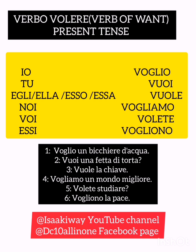Then the next one: 'noi vogliamo', which is 'we want'. Next: 'voi volete', which is 'you want' — you people, in plural form. That is not 'you' as one person, but 'you people'.